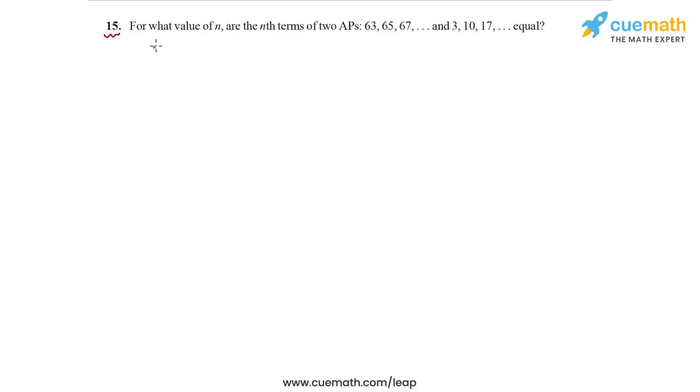In question 15, the problem statement says, for what value of n are the nth terms of two APs equal? The first one being 63, 65, 67 and so on, and the second one being 3, 10, 17 and so on. For what value of n are the nth terms equal in these two APs?